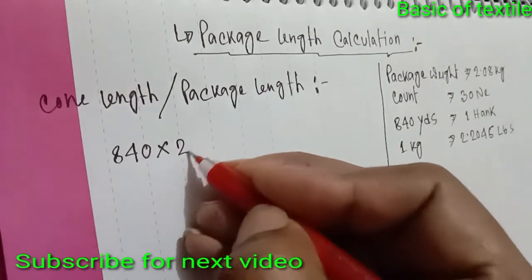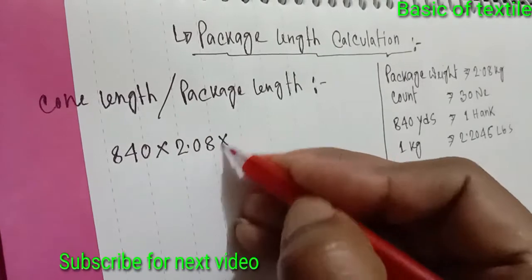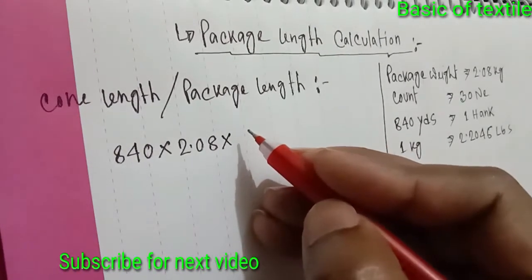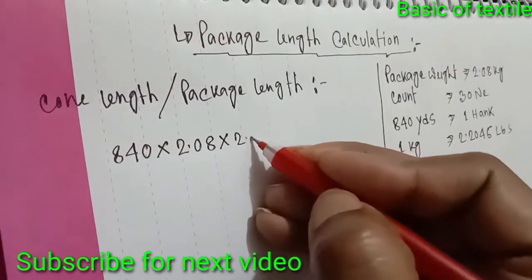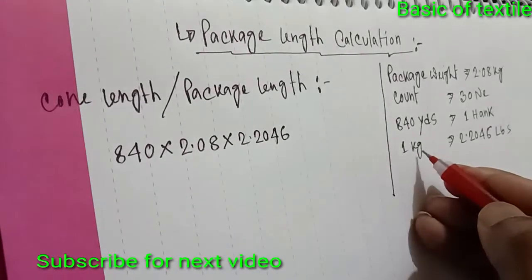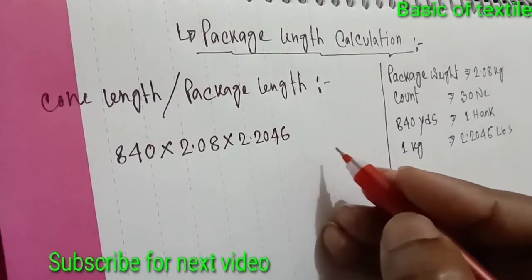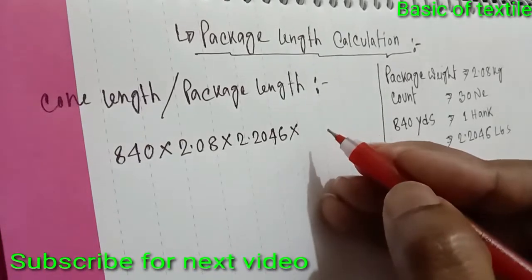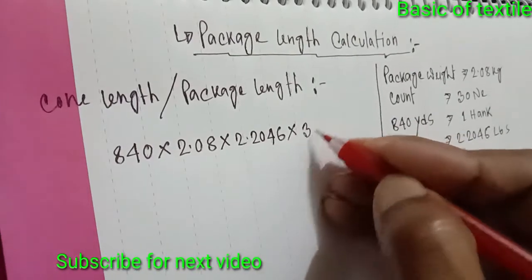Then 2.08 kg package weight. 1 kg equal 2.2046 pound. 30 count.